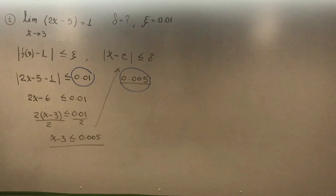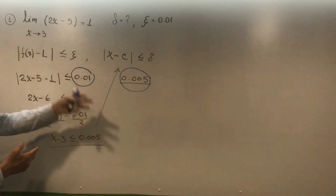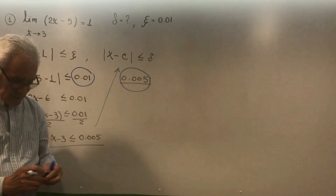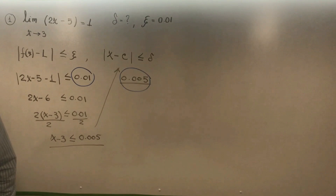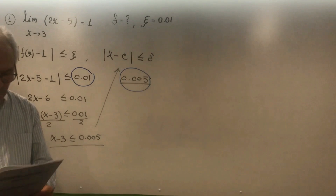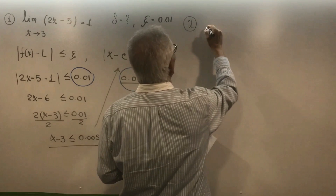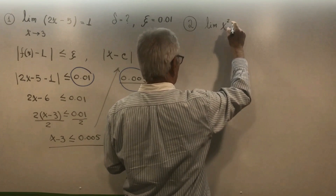The most important thing in this example is that we learned how to find delta given epsilon. We can also apply the inverse procedure to do the same. Let's check another example. Example number 2: given the limit of x squared as x approaches 2 equals 4.